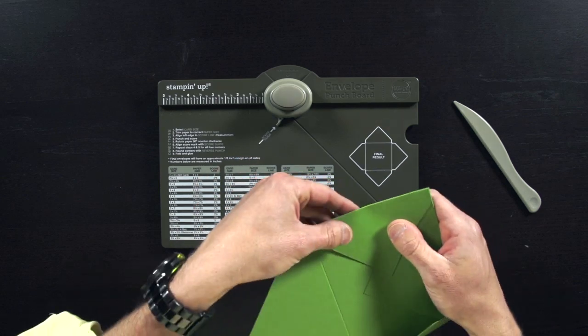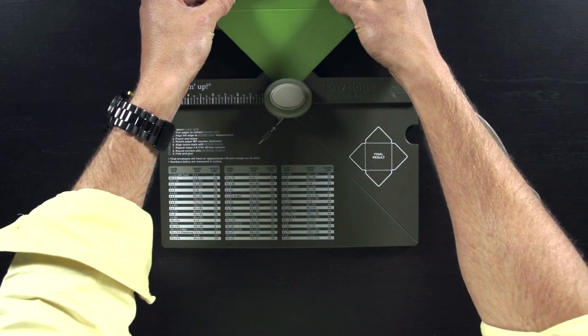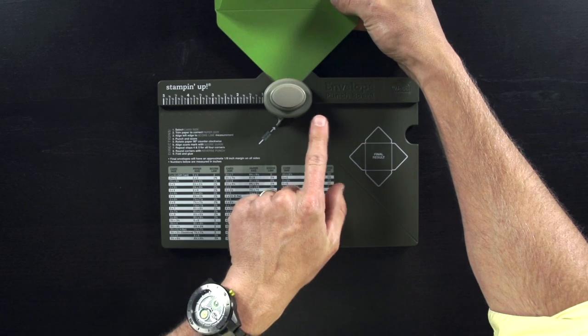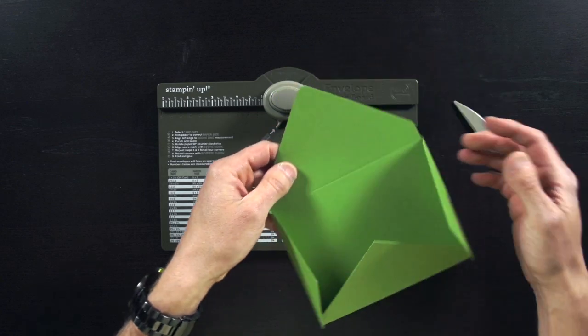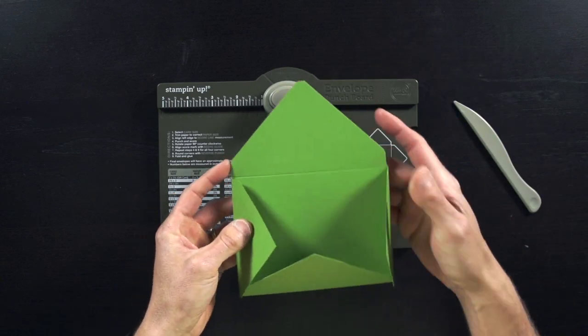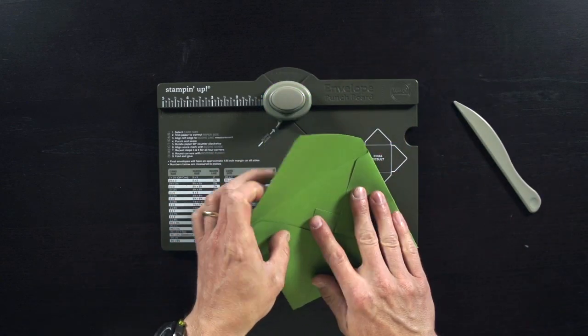And then to finish this off, I'm going to take the very top of my envelope, and you of course could do this with all the sides if you wanted. I'm going to go on the reverse side of the punch right here and punch. And right there, I have an awesome corner rounder punch right there that will finish off my envelope.